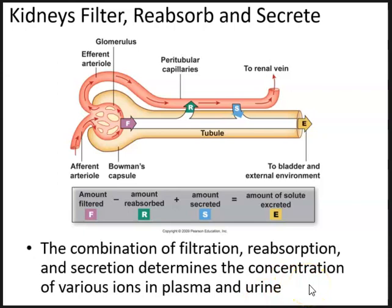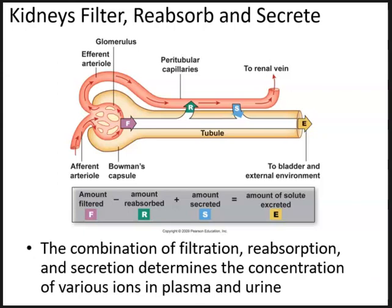The combination of filtration, reabsorption, and secretion determines the concentration of various ions in plasma and urine. For example, if we have excessive sodium, the only way to get rid of it is through urination. pH is determined by hydrogen ions, and our kidneys — along with our lungs — are responsible for maintaining acid-base balance. The lungs can breathe out more carbon dioxide, while the kidneys can excrete hydrogen ions in urine.